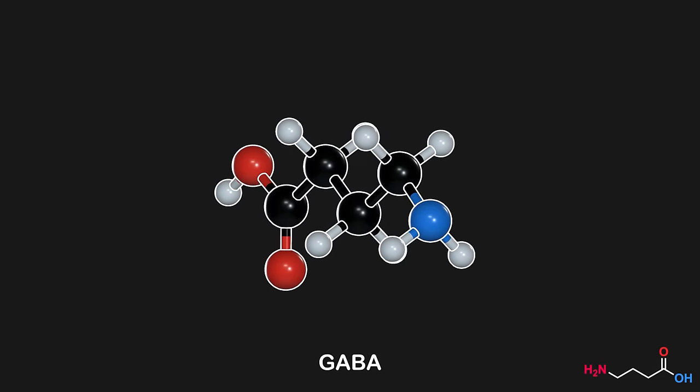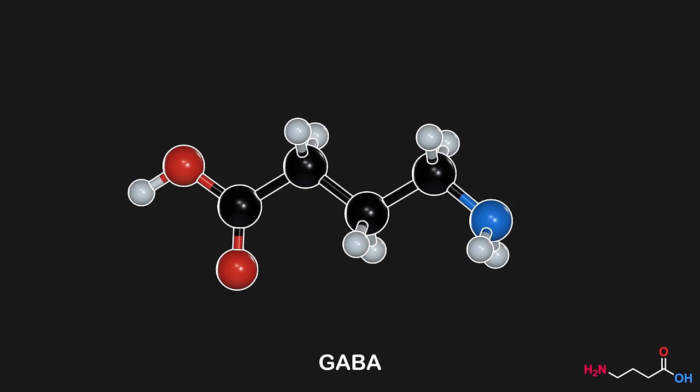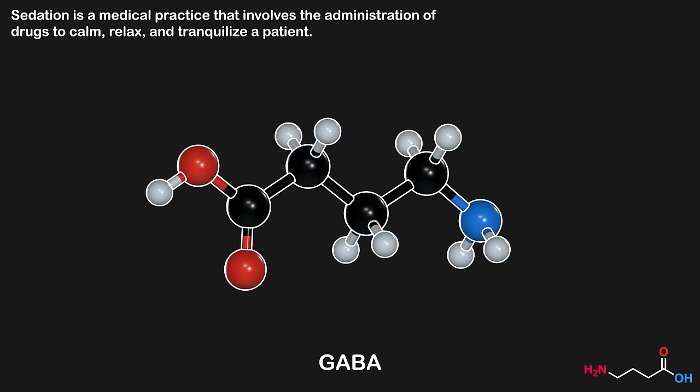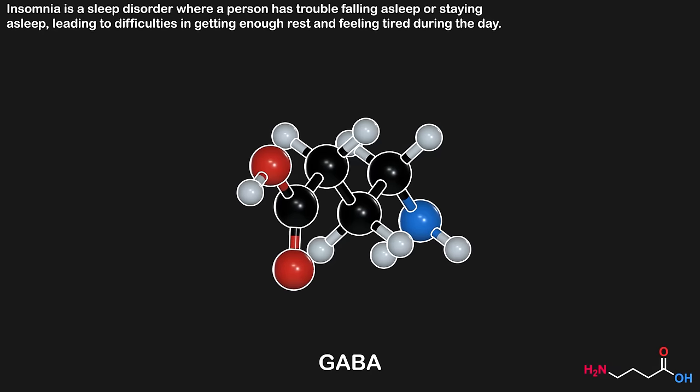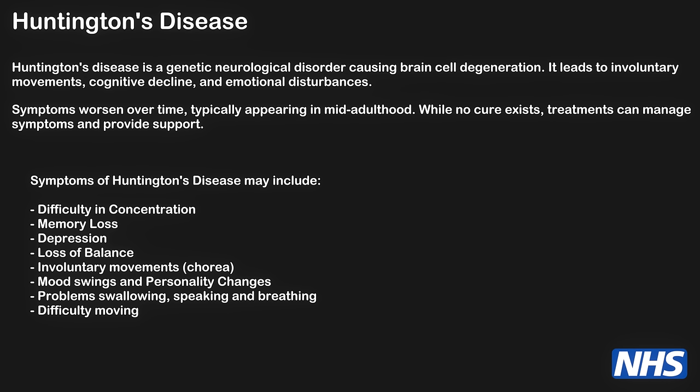Maintaining the balance of GABA is pivotal for our well-being, with imbalances linked to significant physical and mental health complications. For instance, an excess of GABA may result in sedation and potential respiratory distress, while a deficiency could lead to conditions such as anxiety, insomnia, and epilepsy. In genetic disorders such as Huntington's disease, patients typically exhibit reduced levels of GABA.